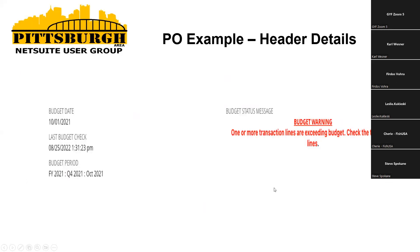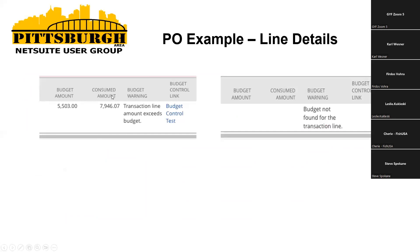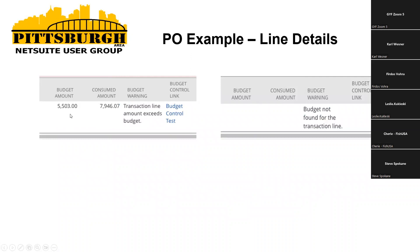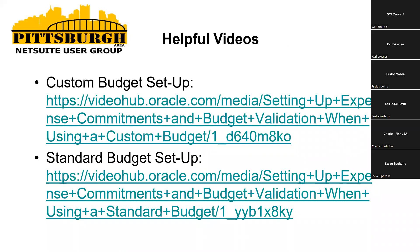This is really just an example of what you're going to see at the header level for a PO, very similar for a purchase request and a vendor bill. At the header level, as mentioned earlier, it's going to throw right on the header that one or more transaction lines exceed budget — check the transaction lines. If you navigate down, in the case of an exceeding budget, you can see the consumed amount exceeds your budget amount. Or in the case where no budget is found, it will throw a warning that there is no budget for that transaction line. After two or three rounds of testing, it did become more intuitive. There are also two really good videos out there to work through, depending on whether you want to use the custom budget setup or standard budget setup.